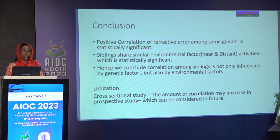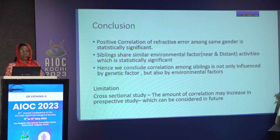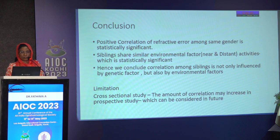In conclusion, a positive correlation of refractive error among same-gender siblings is observed, which is statistically significant. Siblings share similar environmental factors — near and distant activities — which is also statistically significant. Hence, correlation of refractive error among siblings is influenced by both genetic and environmental factors. The limitation is its cross-sectional design; the percentage of correlation may increase in a prospective study, which can be considered in the future.